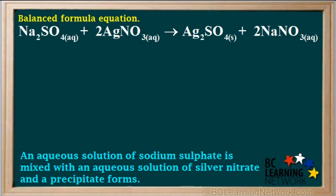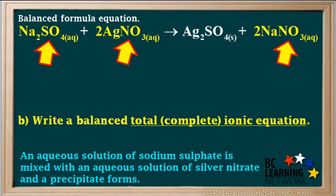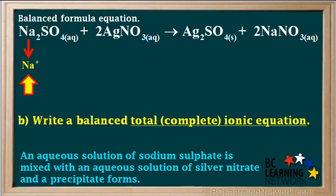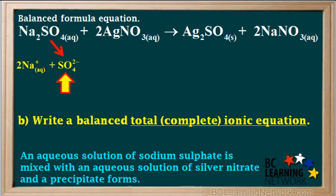So we have now finished writing the balanced formula equation. Part B asks us to write a balanced total ionic equation, also called a complete ionic equation. To write a total ionic equation, we break up all the aqueous compounds into their dissociated form, showing their individual ions. The sodium sulfate contains Na+ ions. The subscript 2 in the formula tells us there are two sodium ions, so we write the coefficient 2 in front of the Na+ AQ. The other ion in sodium sulfate is the sulfate, or SO4 2- ion, and since the compound is aqueous, so is the sulfate ion. So we write AQ here.